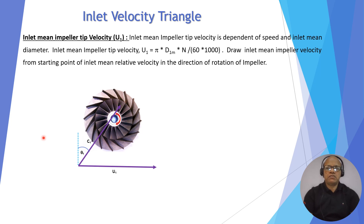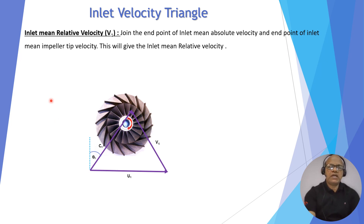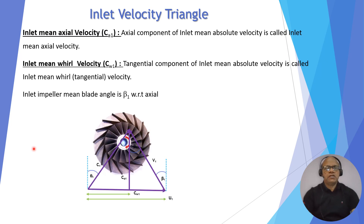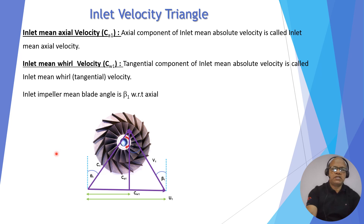Draw the inlet mean impeller velocity U1 from the starting point of the inlet mean relative velocity in the direction of rotation of the impeller. Then join the end point of U1 and end point of C1 — this gives the inlet mean relative velocity V1. The axial component of C1 gives the inlet mean axial velocity Ca1, and the tangential component in the direction of rotation is Cw1, the inlet mean whirl velocity.